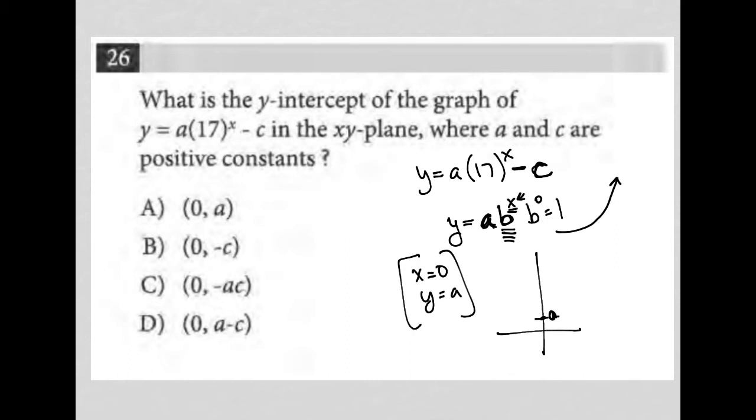Then what does this minus c do? That minus c takes that y-intercept down c units, however many it is. It doesn't have to go to negative, but it's going to go down by c units. And that c units is going to be wherever a minus c is. So if a were way up here at 10 and c were, let's say, a equal 10, but c equaled 5.